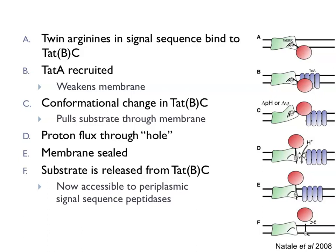The twin arginines in the signal sequence mediate binding to the TatBC complex, or to TatC alone when TatB is not present. TatA is then recruited, and you get weakening of the membrane and a conformational change in the TatBC complex, pulling the substrate through the membrane. There is a proton flux through the hole which partly drives the protein through as well. Then the membrane gets sealed up, the substrate is released on the other side, and signal peptidase cleaves off the signal peptide, releasing the protein on the other side of the membrane.